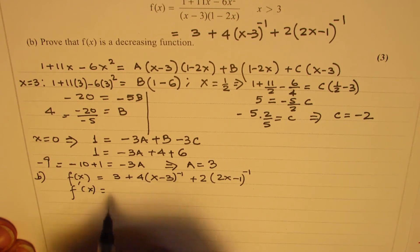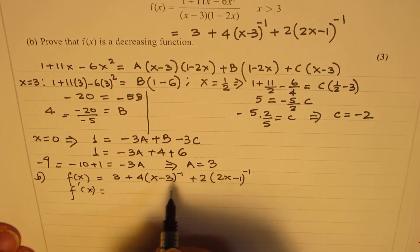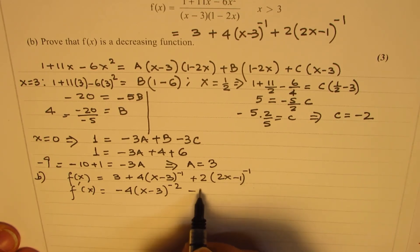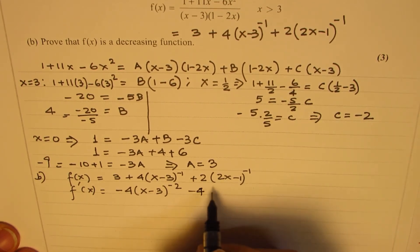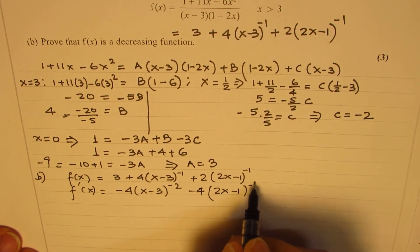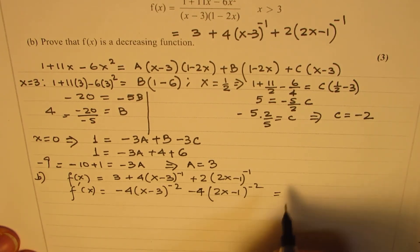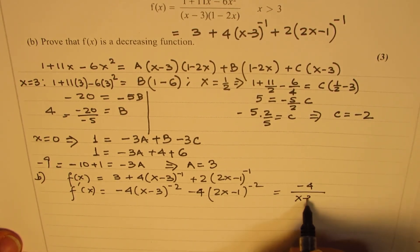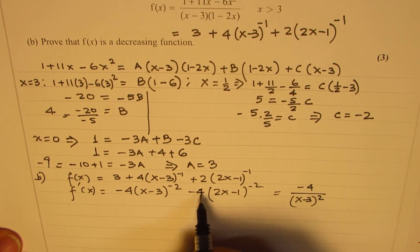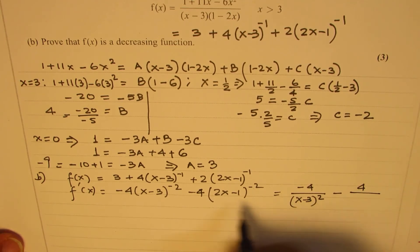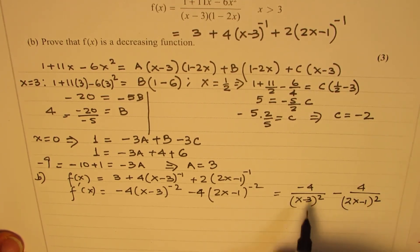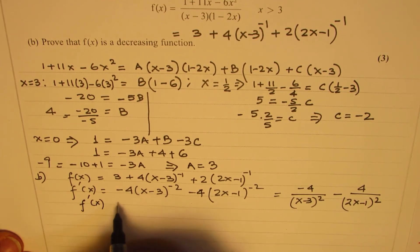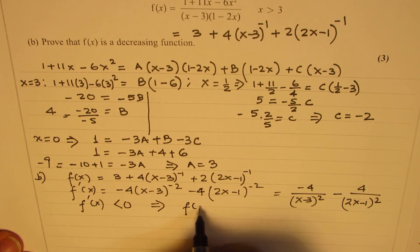The derivative of this function: the constant 3 gives 0. Differentiating 4(x - 3)⁻¹ gives -4(x - 3)⁻². Differentiating 2(2x - 1)⁻¹ gives -4(2x - 1)⁻². So f'(x) = -4/(x - 3)² - 4/(2x - 1)². Both terms are negative, and therefore we can clearly see that f'(x) < 0, which implies that f(x) is a decreasing function.